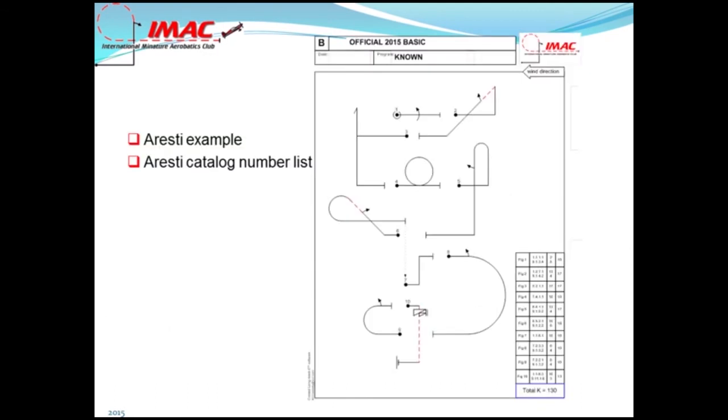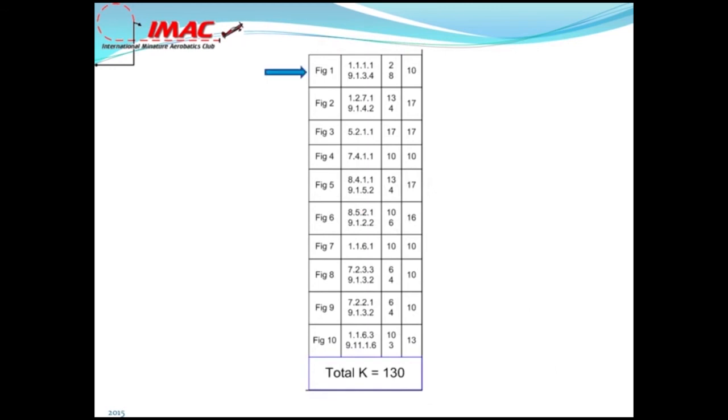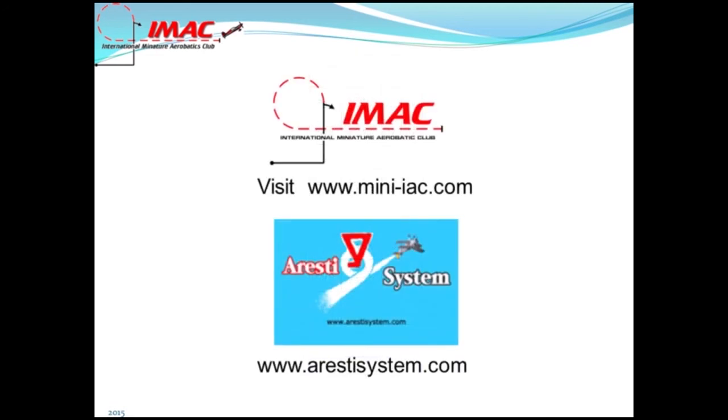This is an example of an Aresti sequence. Notice on the lower right-hand side, the Aresti catalog numbers are listed. Let's take a look at figure number one. Has a base figure of 1.1.1, found in the Aresti catalog. Base figure holds a K-factor of 2. The roll element, 9.1.3.4. The roll element has a K-factor of 8. The entire figure has a total K-factor of 10. For more information, log on to mini-iac.com or arestisystem.com.